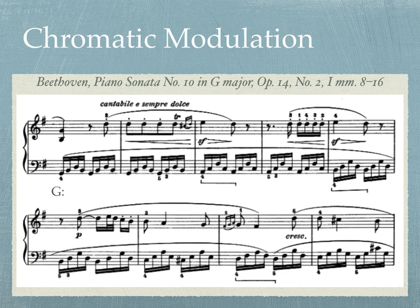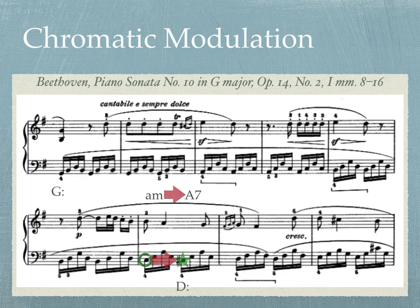Listen to this example from Beethoven's Piano Sonata No. 10 in G Major. Notice how the C in the second measure of the second system becomes C-sharp on the second beat. That's our chromatic inflection needed to enact the modulation. It makes the A minor chord, which is diatonic to G Major, our home key, become an A dominant seventh, which leads us to D Major, our new key. The presence of C-sharp in the following measures helps to confirm that modulation to D Major.